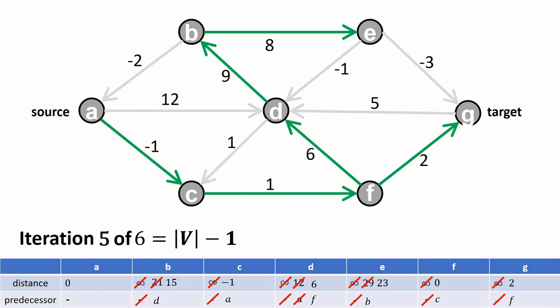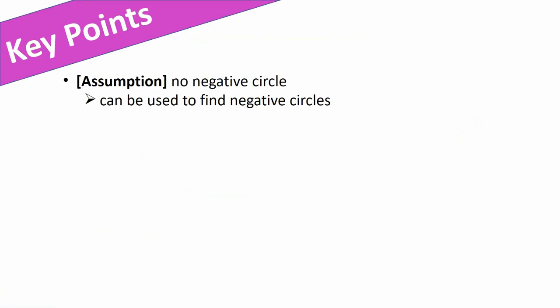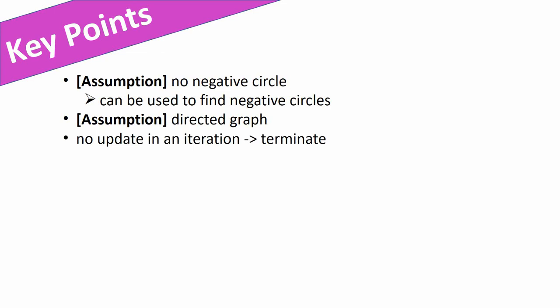That's the Bellman-Ford algorithm. To summarize: assumption one — no negative circle in the graph, though as a side note you can use the algorithm to check whether a graph has a negative circle. Assumption two — the graph must be directed; if not, replace undirected edges by two directed edges. And if no update is performed in an iteration, you can terminate the algorithm immediately and obtain the shortest paths.